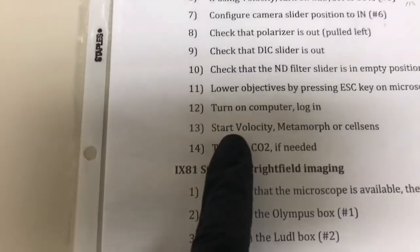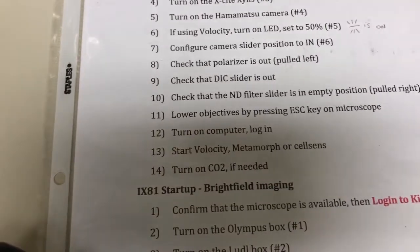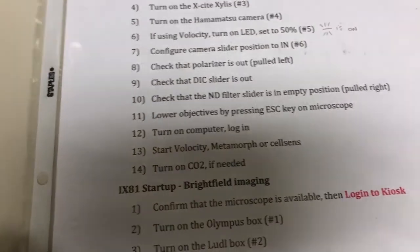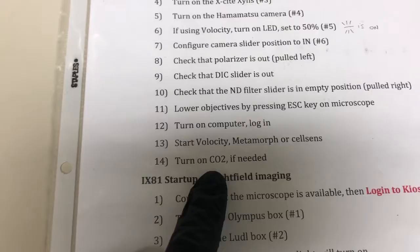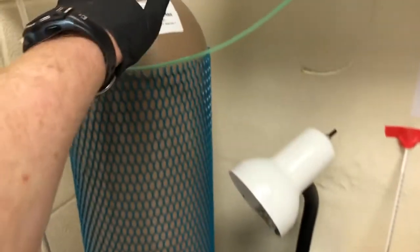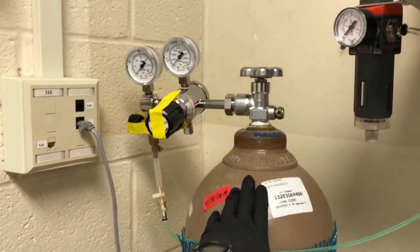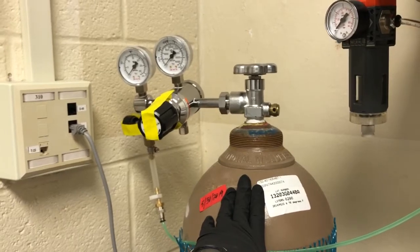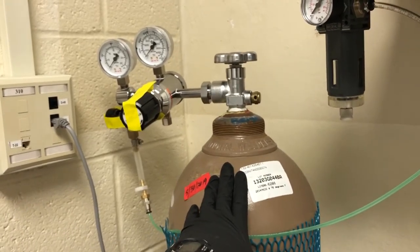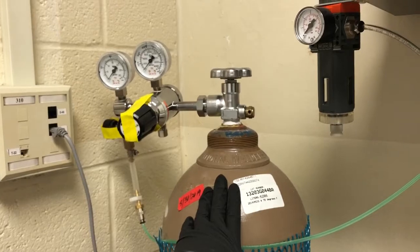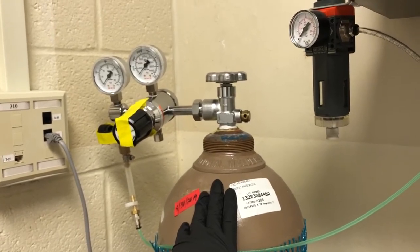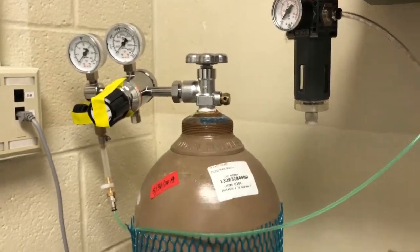So I'm going to skip that step just because I want to go into how to use the different software and other videos, which will be linked from this one. Finally, turn on the CO2 if needed. This is if you're doing live cell imaging, I will eventually have videos about live cell imaging. But for now we don't need to bother with that. I'm going to assume that for a typical startup, you don't need you're not going to do live cell imaging, so you can skip this.